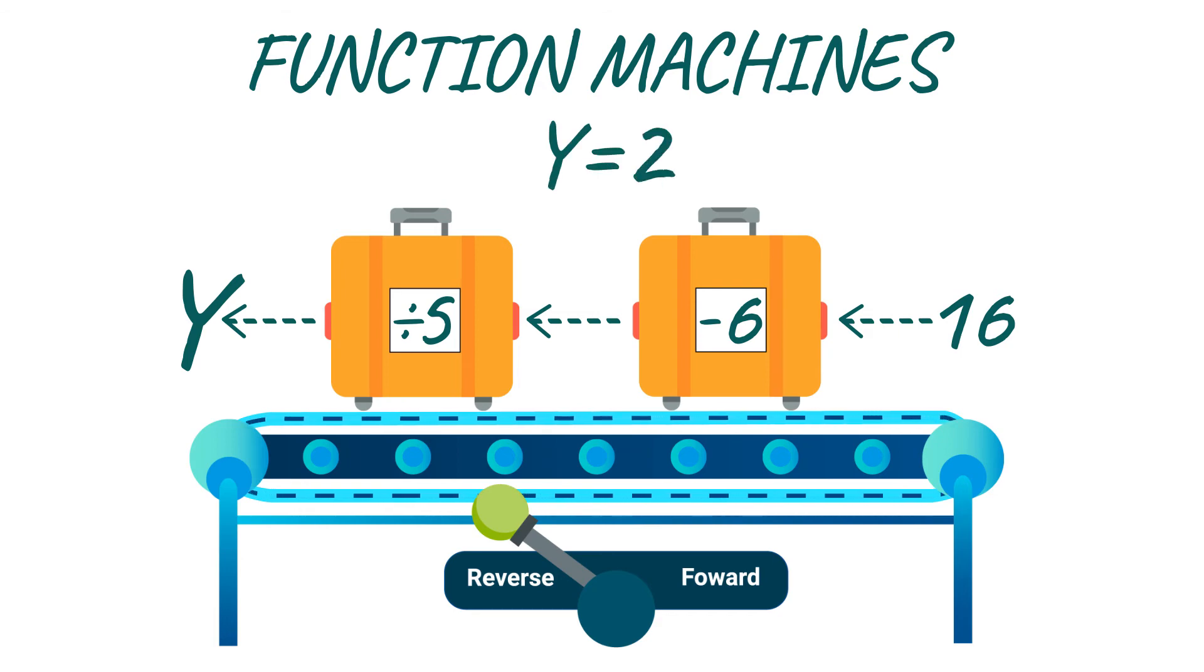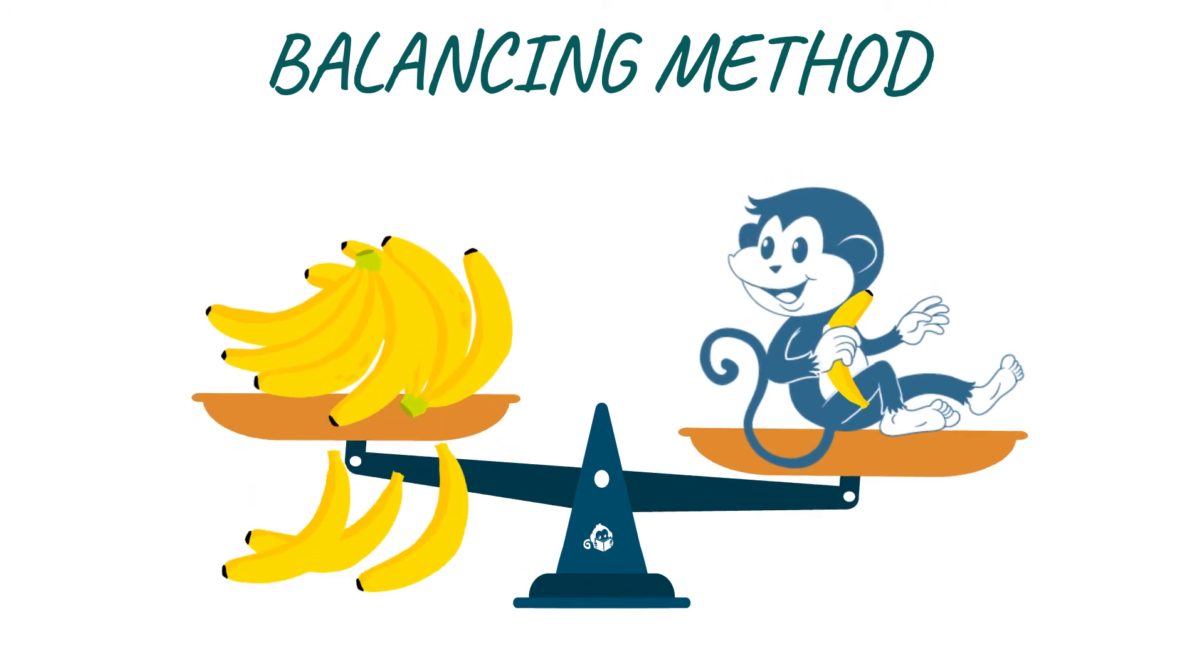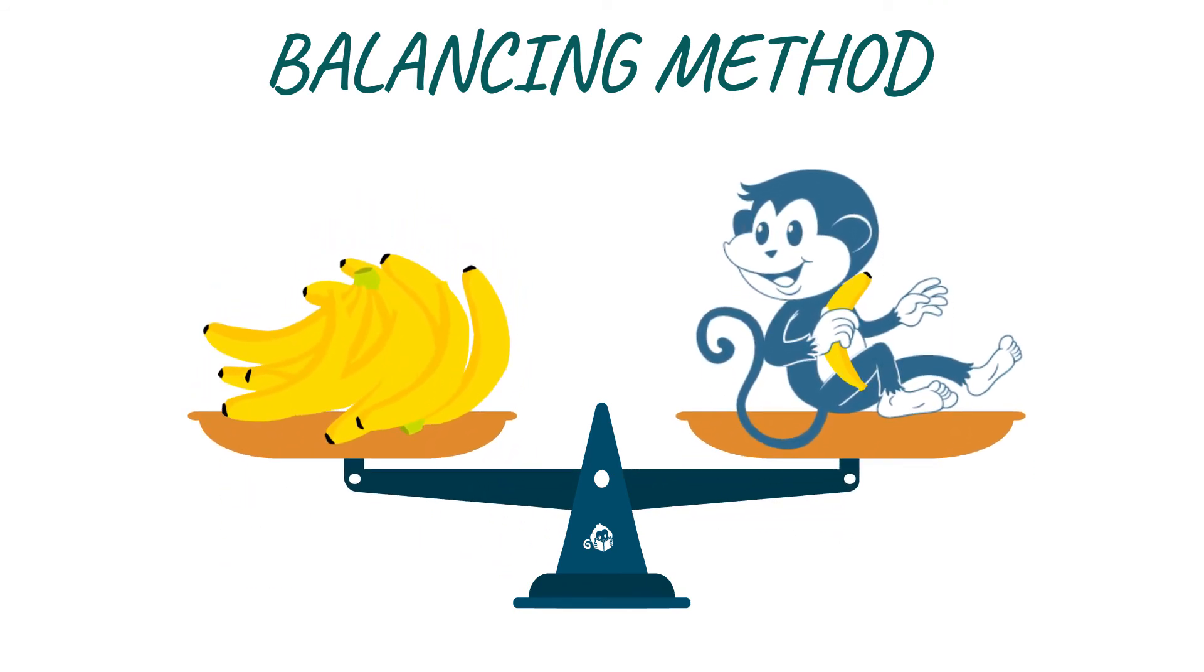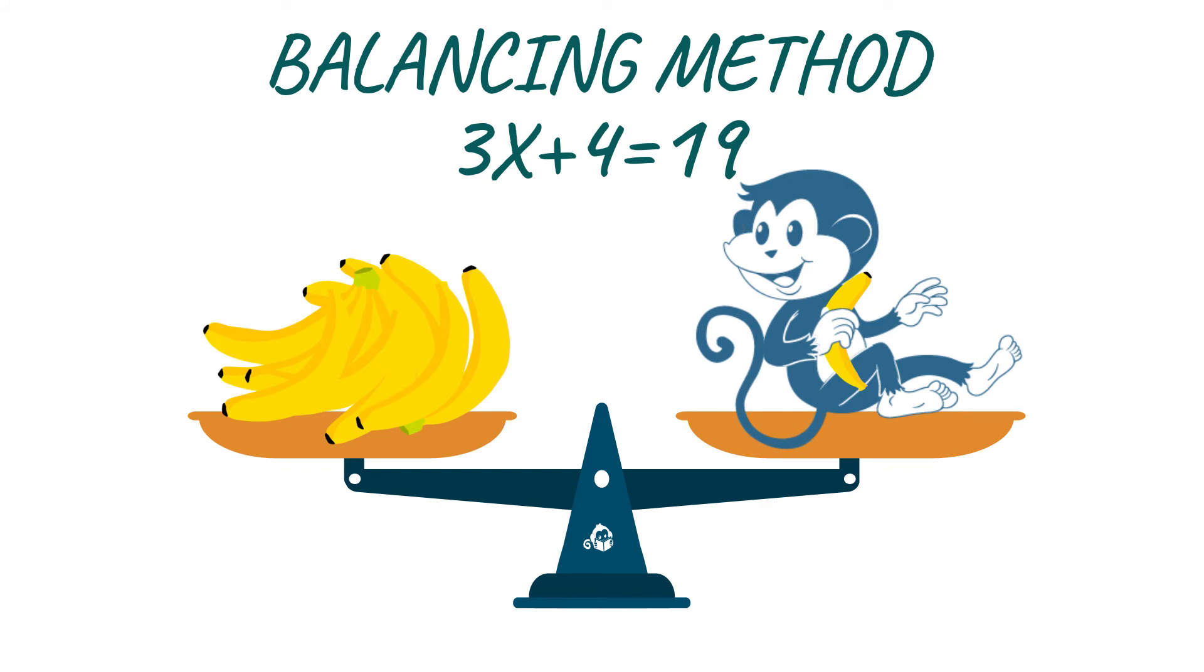Okay, now we have one last method to talk about. It's called the balancing method. This is the best method to use when you move on to harder equations. Let's imagine we have this equation. It looks a little tricky, no? Okay, let's simplify it. Imagine a set of scales.